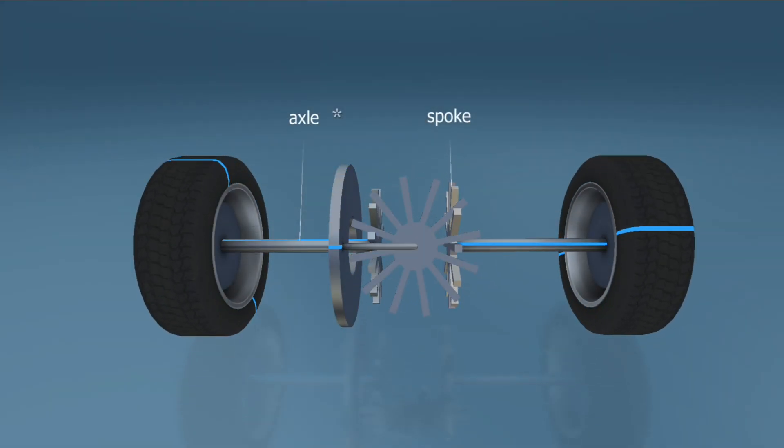If we add even more spokes and crossbars and thus fill in the spaces between them, this results in an even more continuous operation.